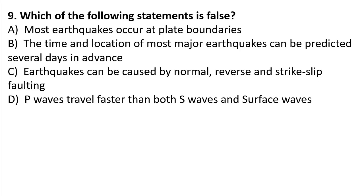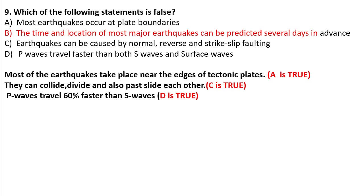Question 9: Which of the following statements is false? A) Most earthquakes occur at plate boundaries. B) The time and location of most major earthquakes can be known several days in advance. C) Earthquakes can be caused by normal, reverse, and strike-slip faulting. D) P waves travel faster than S waves and surface waves. The answer is B — we cannot know earthquakes several days in advance.